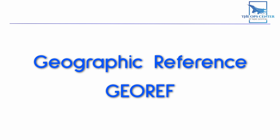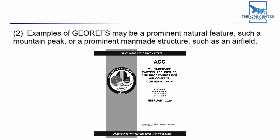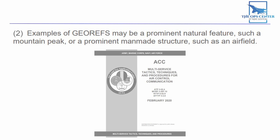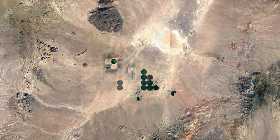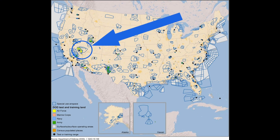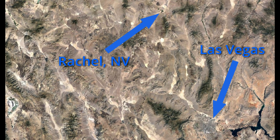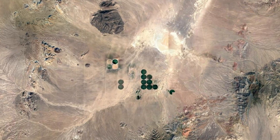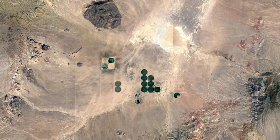There's one last type of reference to cover: the geographic reference, or GeoRef for short. GeoRefs may be a prominent natural feature such as a mountain peak, or a prominent man-made structure such as an airfield. GeoRefs work exactly like bullseye — the only difference is they are some other point besides the agreed-upon bullseye. These locations are important because friendly aircraft may not always be near bullseye, so another easy-to-find reference is needed for coordination over a wider area. A good example are the farms near the town of Rachel in Nevada, used for USAF Red Flag exercises. The desert doesn't offer many identifiable landmarks, but these big green circles stick out, so they're known as 'the farm,' and you can give bullseye-format calls using farm as the GeoRef.